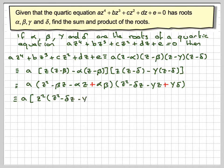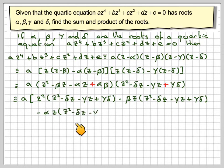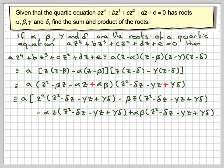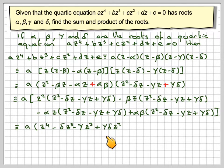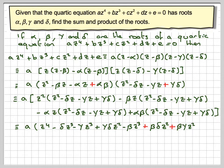Now we multiply those two quadratics together: z² times the second bracket, then minus beta·z times the second bracket, minus alpha·z times the second bracket, plus alpha·beta times the second bracket. Being careful with signs and leaving the a at the front. We get z⁴ minus delta·z³ minus gamma·z³ plus gamma·delta·z². Then minus beta·z³ plus beta·delta·z² plus beta·gamma·z² plus beta·gamma·delta·z.